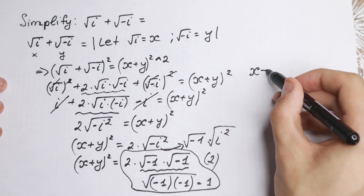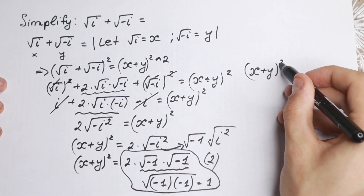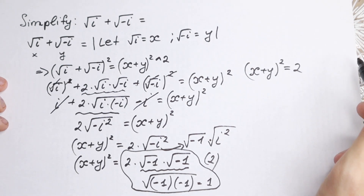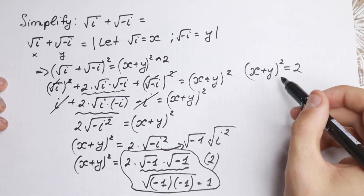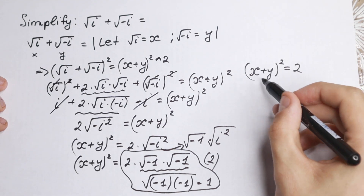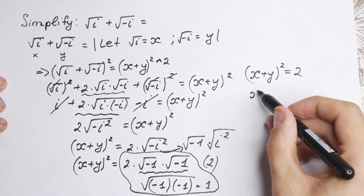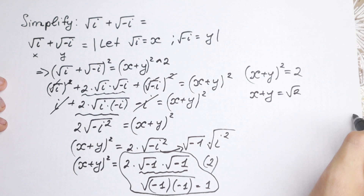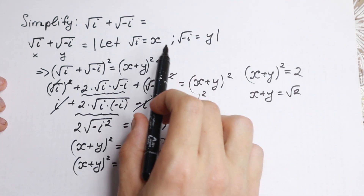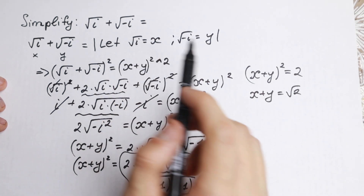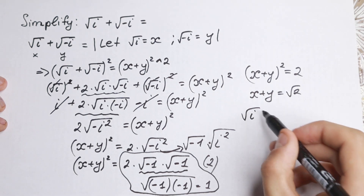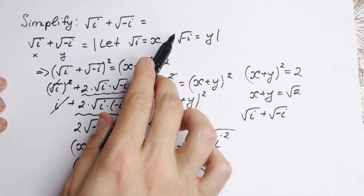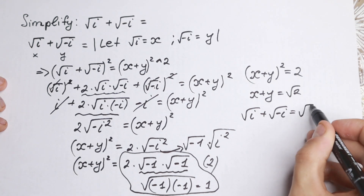So we will have (x + y) squared equal to 2. And how can we get square root of i plus square root of minus i? We take the square root of both sides. We will have x plus y equal to square root of 2. And if we go back to our substitution, x equals square root of i, we will have square root of i plus square root of minus i equal to square root of 2.